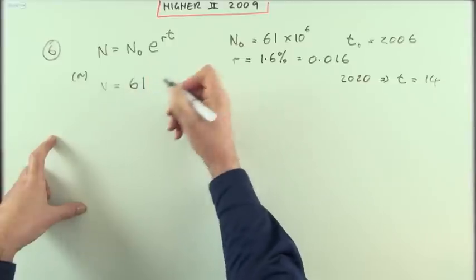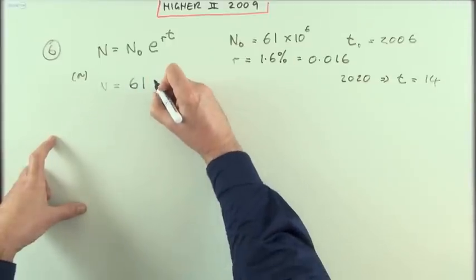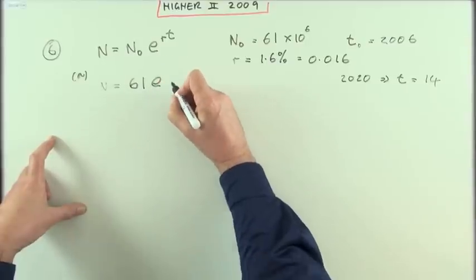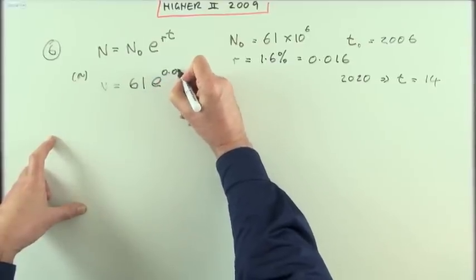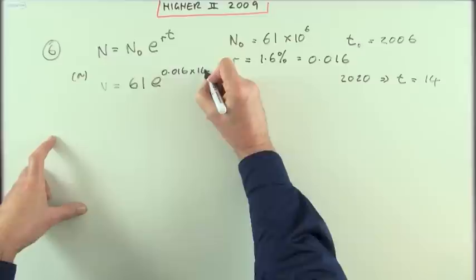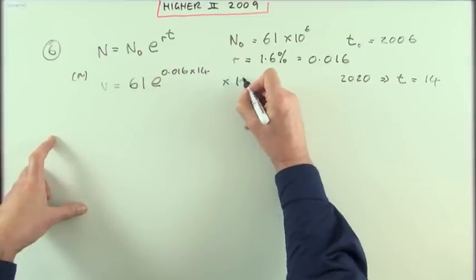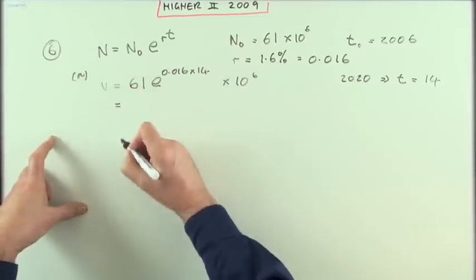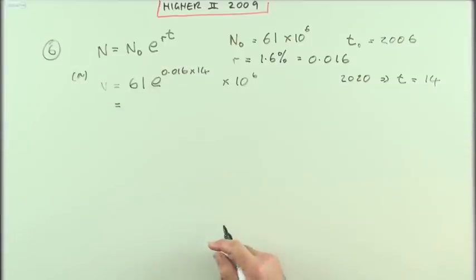N0 is 61 times 10 to the 6, if you like. I can just leave that bit out. E to the 0.016 and T times T is 14. And if you like, afterwards I can put times 10 to the 6. So that's just, you don't need to work any particular part out. Just press those buttons and it'll be there.